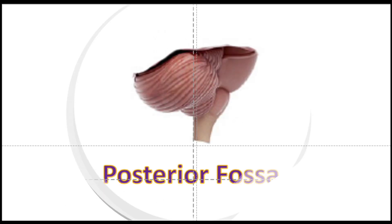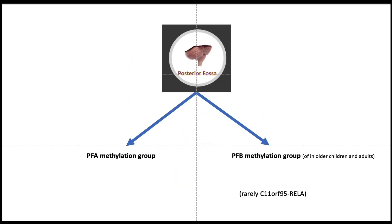Now let us look at the posterior fossa ependymomas. The commonest molecular abnormality seen in ependymomas arising from the posterior fossa is in the methylation group. There are two types: PFA and PFB. The PFB is seen more in older children and in adults. Rarely, the fusion gene C11-ORF95 RELA, seen in supratentorial ependymomas, can also be associated with posterior fossa ependymomas.